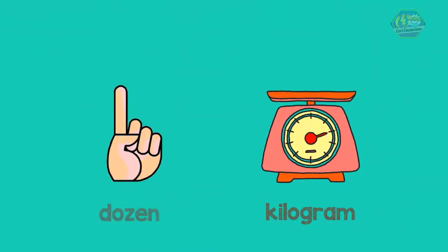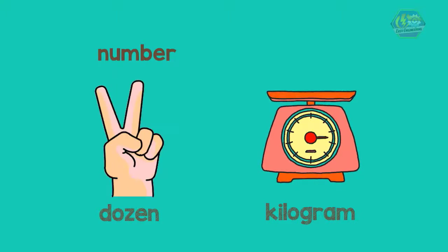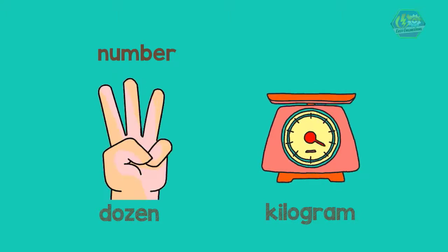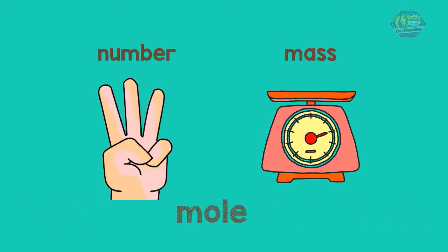A counting unit like dozen tells you the number of objects but not their mass. A mass unit like kilogram tells you the mass of objects but not their number. While the mole tells us both the number of objects and the mass of substance.